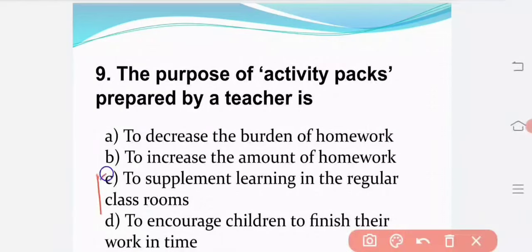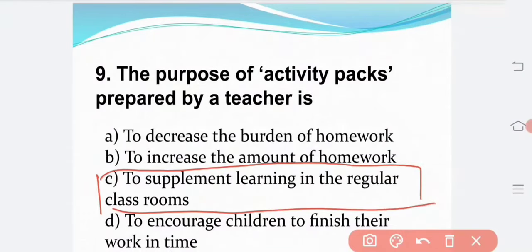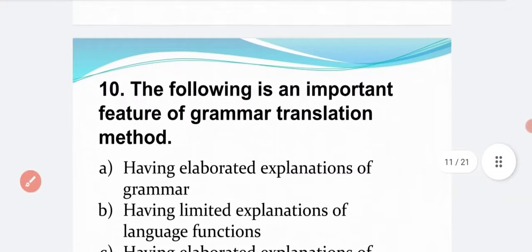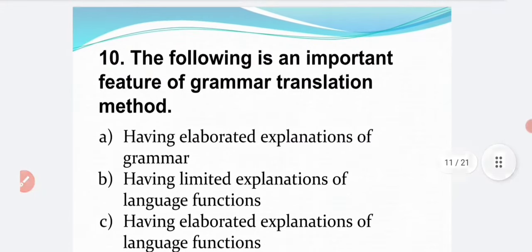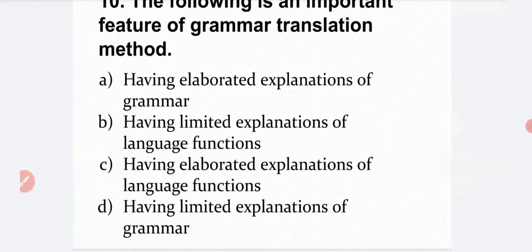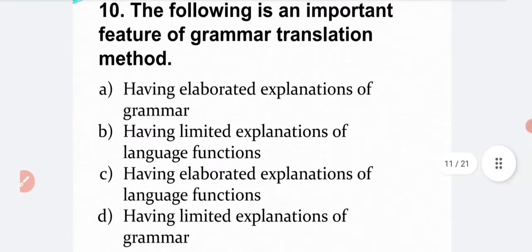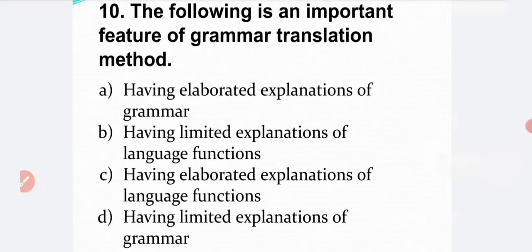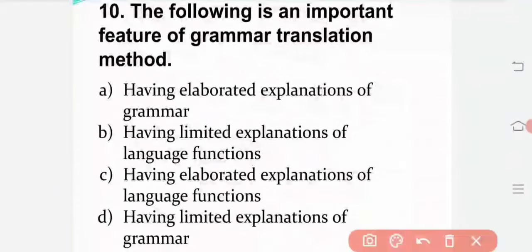The following is an important feature of the grammar translation method. Option D — having elaborate explanations of grammar. The correct answer is Option D: having elaborate explanations of grammar.